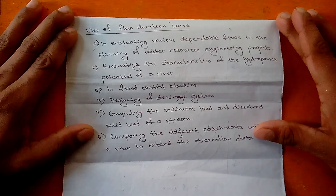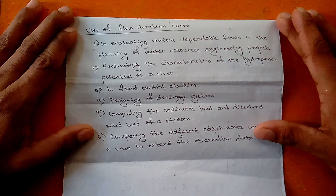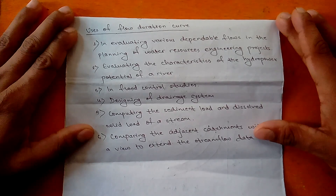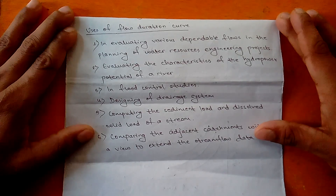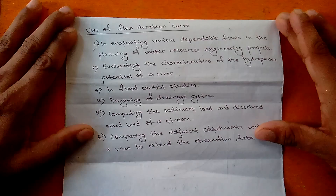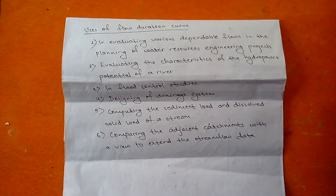By using the flow duration curve, we can calculate the dependable discharge — for example, Q40, Q45, Q30 — and design the hydropower structures accordingly. The second use is evaluating the characteristics of the hydropower potential of a river, since we are directly involving the flow duration curve in finding out the design discharge.